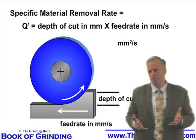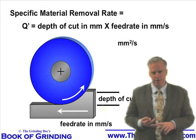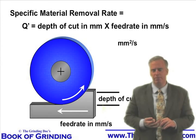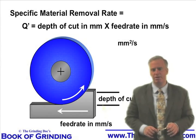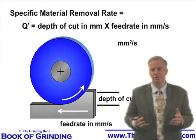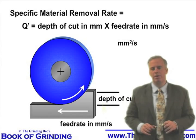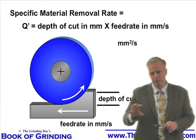The Q' value is just how much material you are removing per unit time. The calculation — a very typical calculation you see a lot, especially with wheel manufacturers and in academic articles — is what's my Q', or what's my specific material removal rate. It's very straightforward: depth of cut in millimeters times feed rate in millimeters per second. What you get is a value in millimeters squared per second, which is your material removal rate.